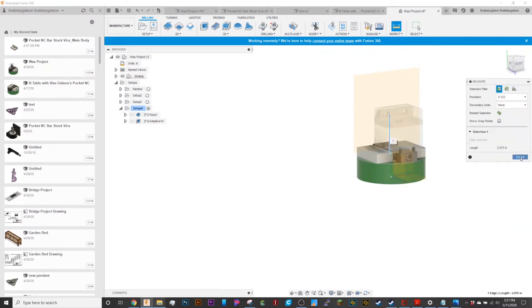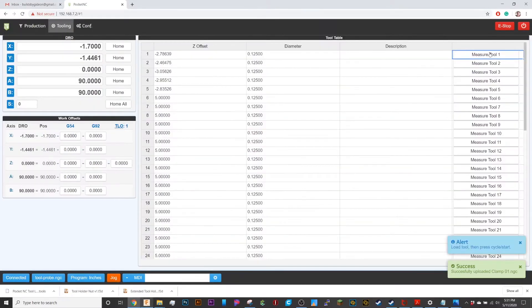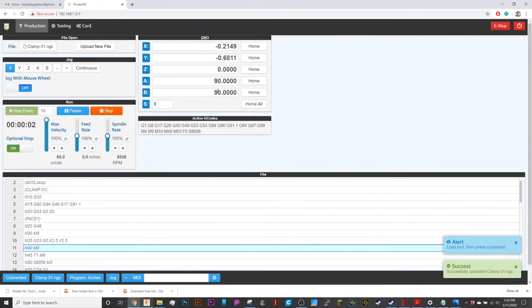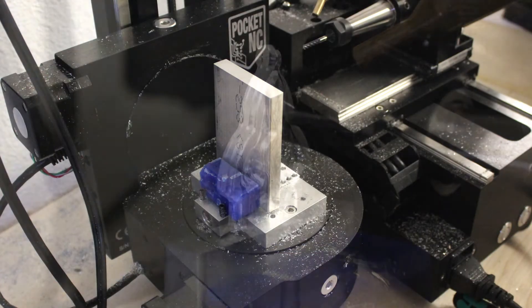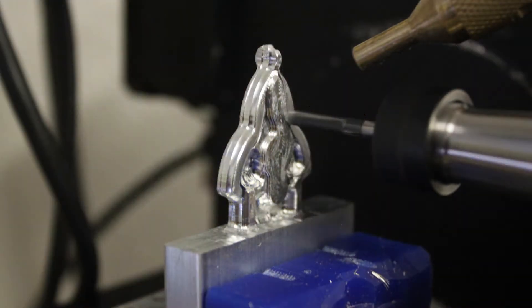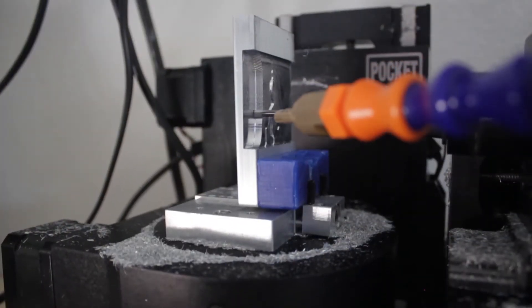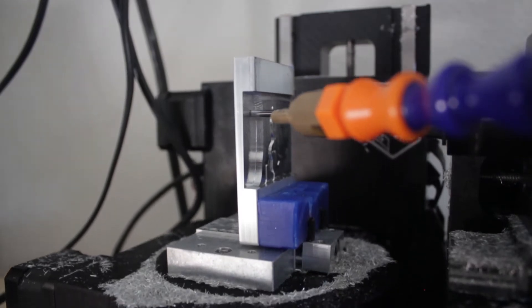One of the people said that I had kind of a cascading slew of issues. One of them being the work holding. Unfortunately the Pocket NC low-profile vise that they have right now is difficult to work with bar stock, so I had to use a piece of wax to brace it in place, which ended up cracking.